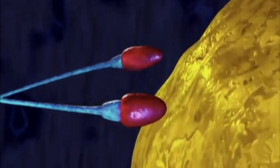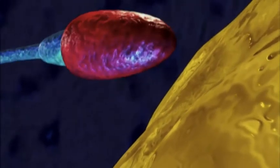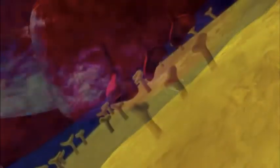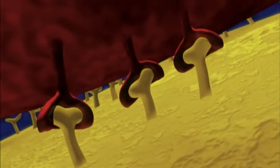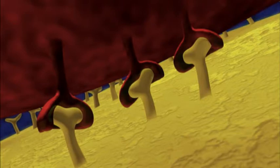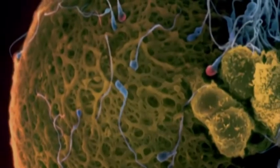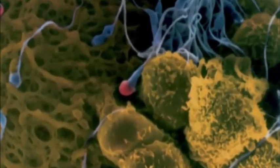The egg demands a proper introduction. Proteins protruding from the sperm's cap must hook up precisely with a set of proteins on the egg's surface. If they match, the sperm is held fast and undergoes a dramatic transformation.